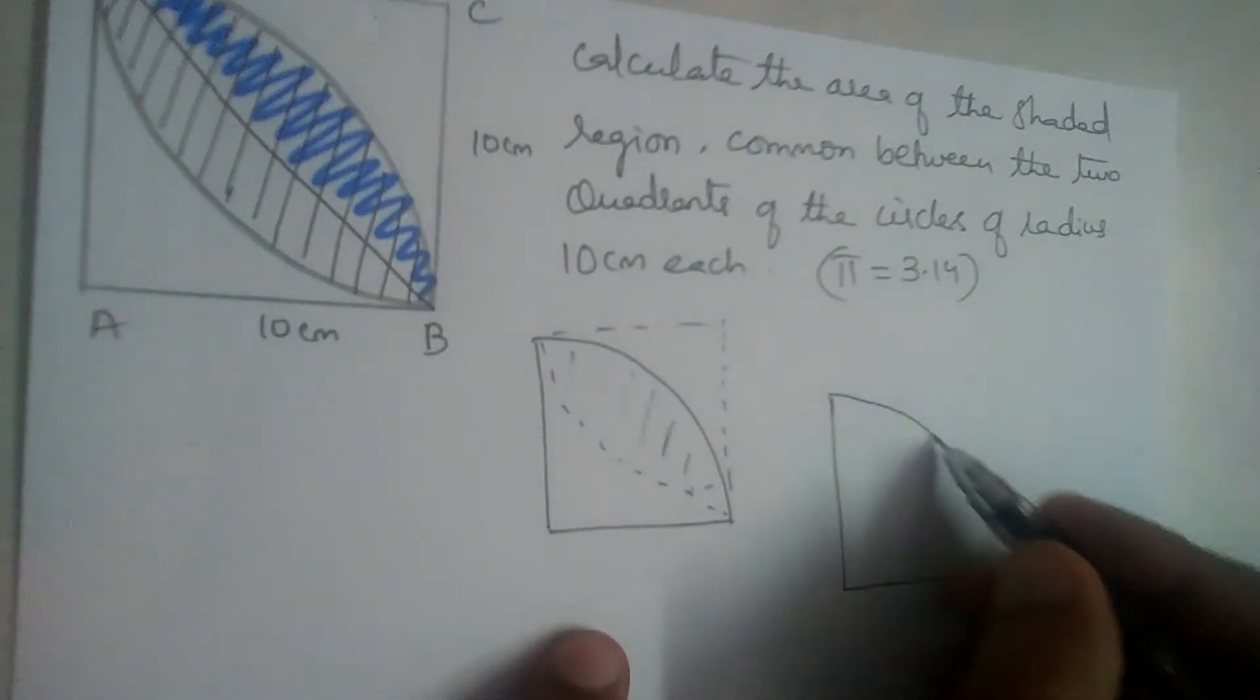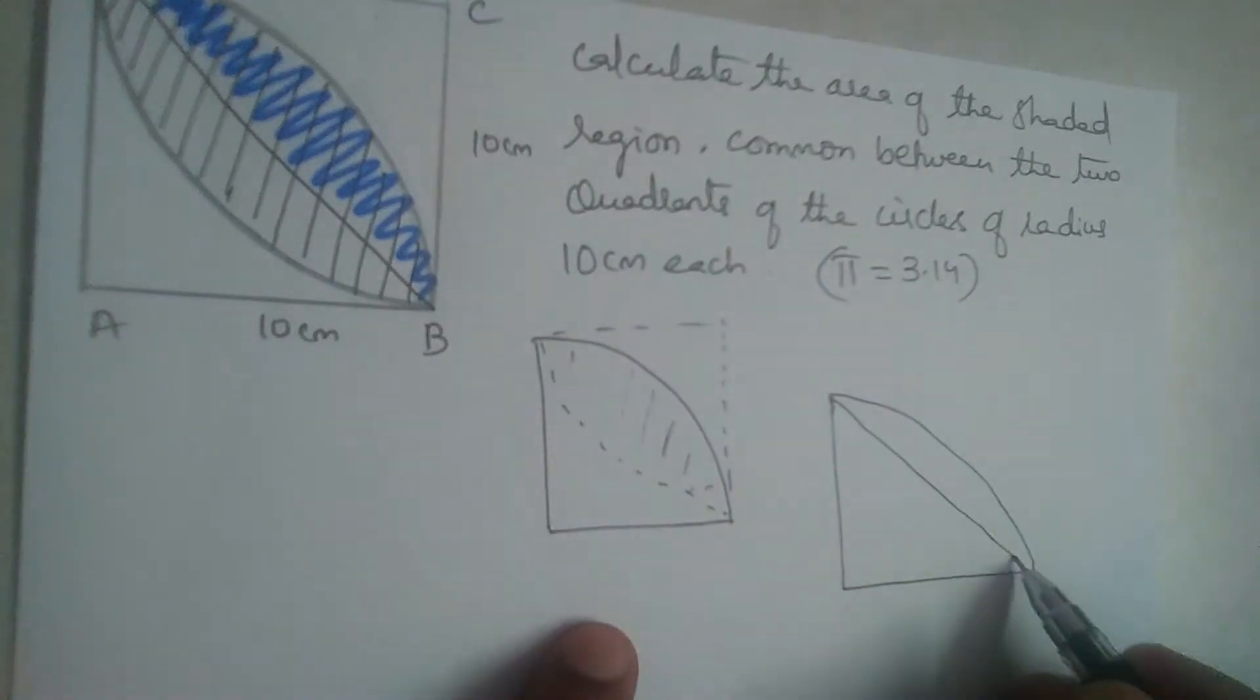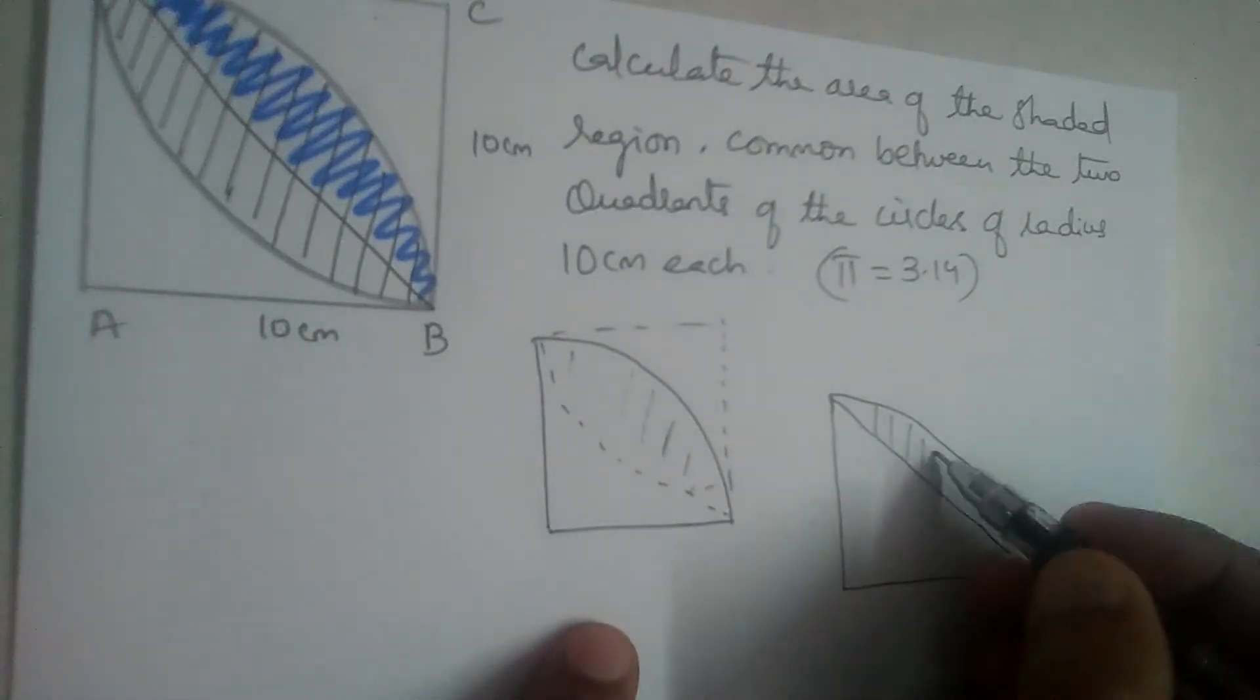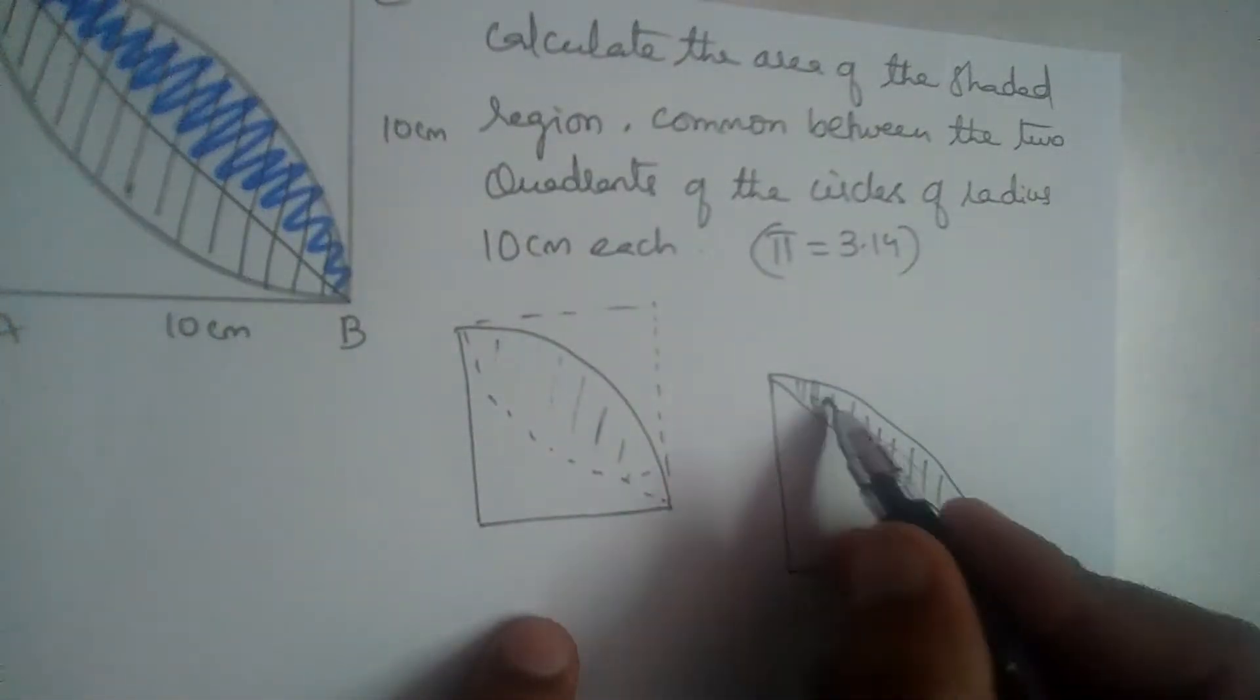It is quadrant minus area of triangle. We need to find this region first.